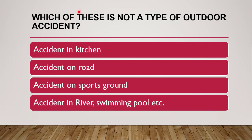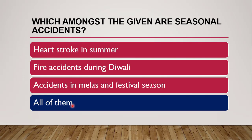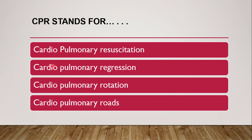Next question: which of these is NOT a type of outdoor accident — accident in kitchen, on road, on sports ground, or accident in a river or while swimming? The correct answer is accident in kitchen, because road, sports ground, and river accidents are all outdoor, while kitchen is indoor.